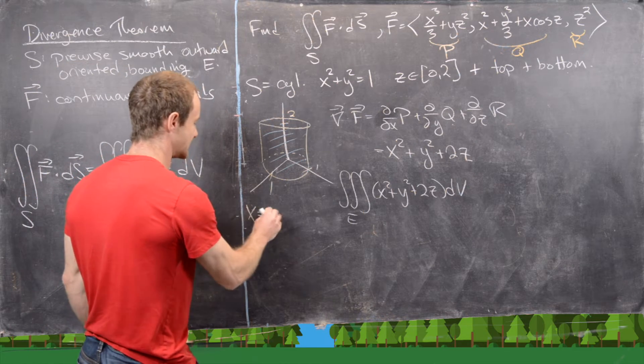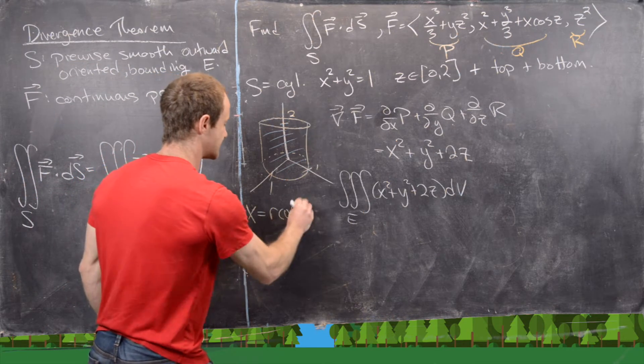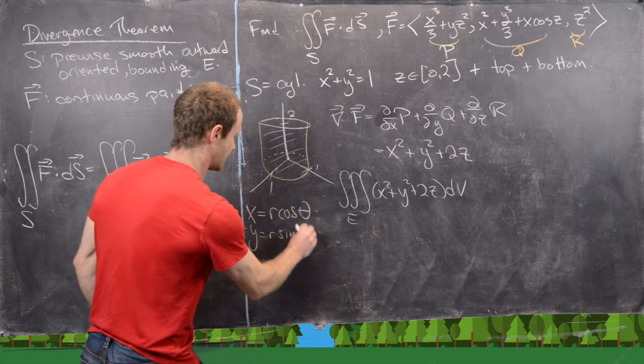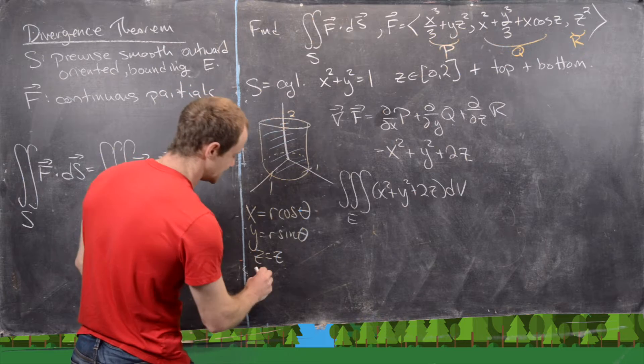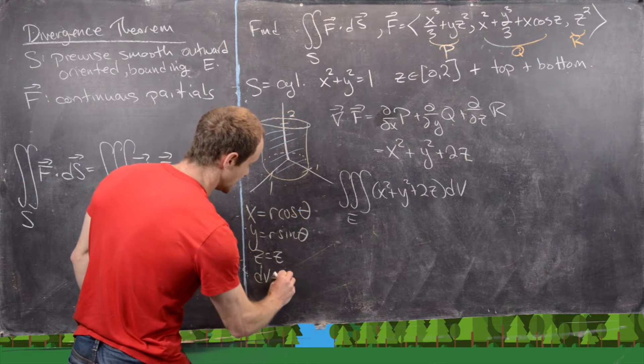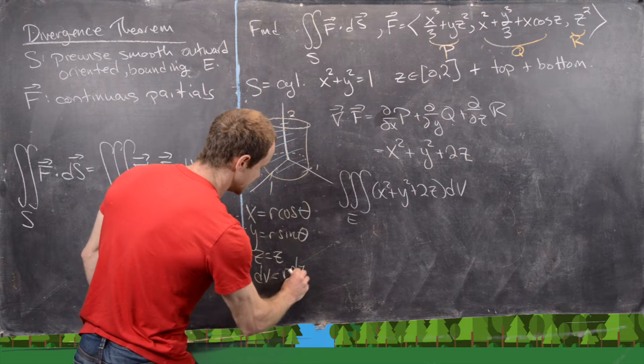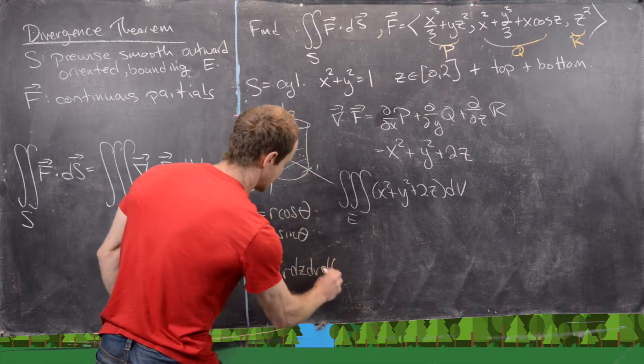So let's recall that means x equals r cosine theta, y equals r sine theta, z equals z, and then dv is going to be r dz dr d theta.